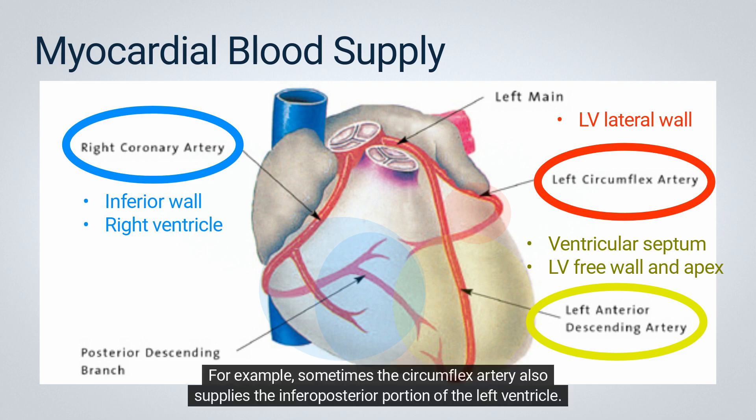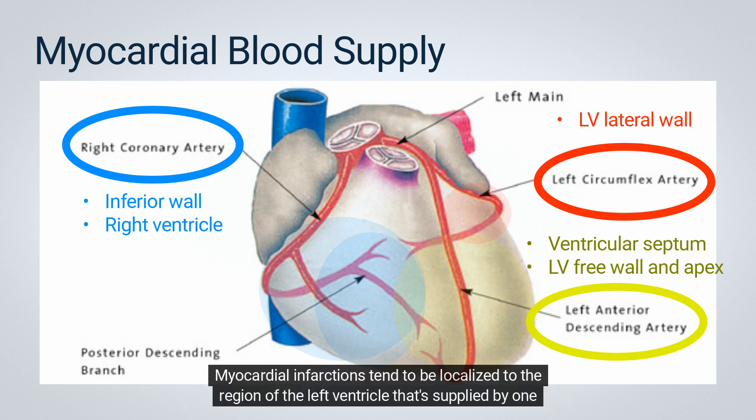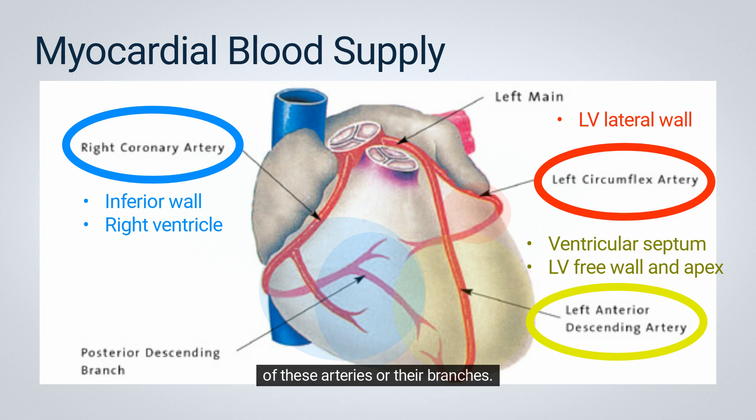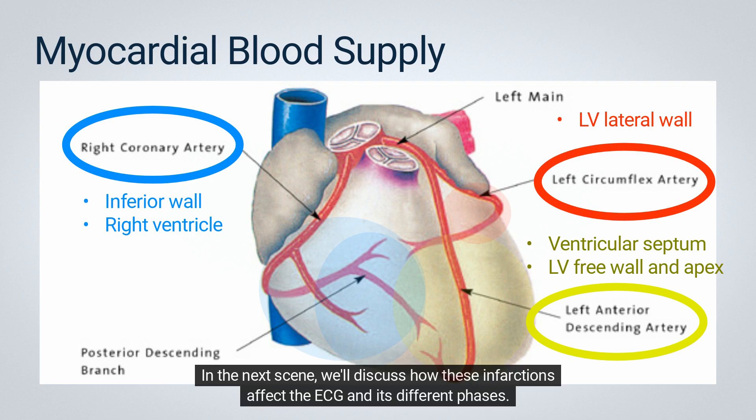It's important to note that this circulation pattern can be variable. For example, sometimes the circumflex artery also supplies the inferoposterior portion of the left ventricle. Myocardial infarctions tend to be localized to the region of the left ventricle supplied by one of these arteries or their branches. In the next scene, we'll discuss how these infarctions affect the ECG and its different phases.